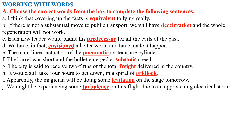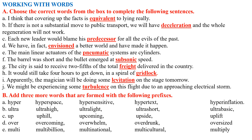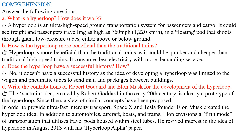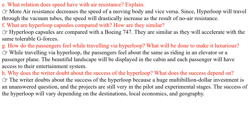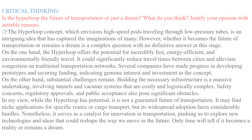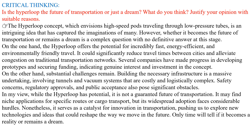Here are the exercises for this chapter. Choose the correct words from the box to complete the following sentences. Add three more words with the following prefixes: hyper-sensitive, hypertext, hyperinflation. Answer comprehension questions: What is hyperloop? How does it work? How is the hyperloop more beneficial than traditional trains? Hyperloop capsules are compared with Boeing 747 — they are similar as they will accelerate with the same tolerable deceleration.